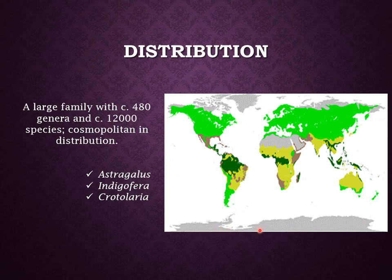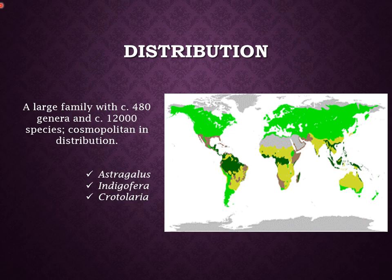Indigofera and Astragalus with more than 900 species, Indigofera with 700 species, and other large genera include Crotalaria with 600 species. Hence the family is considered the third largest group of flowering plants.